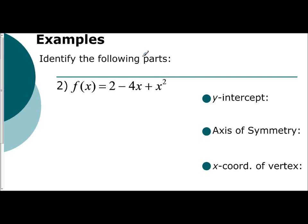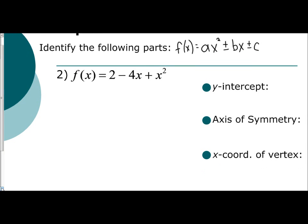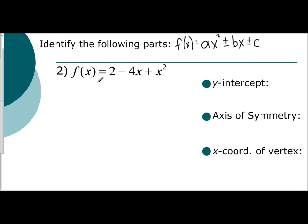When we're identifying the following parts, remember the standard form of a quadratic function is f(x) = ax² ± bx ± c. Your quadratic term first, your linear term next, and your constant. That's important to know because I'm given f(x) = 2 - 4x + x².